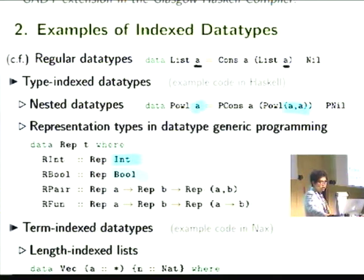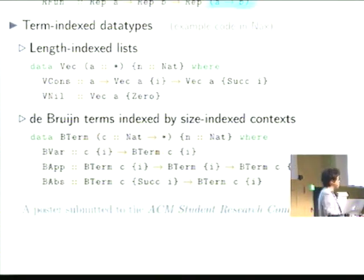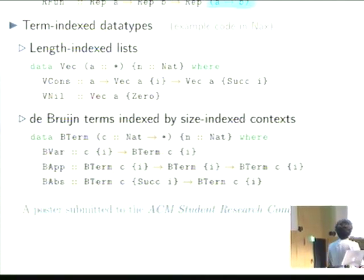With GADT extensions, we can go even more wild. We can vary the results of the datatypes and use this kind of term reflecting the information of the closed type world, and do interesting things like data-generic programming.